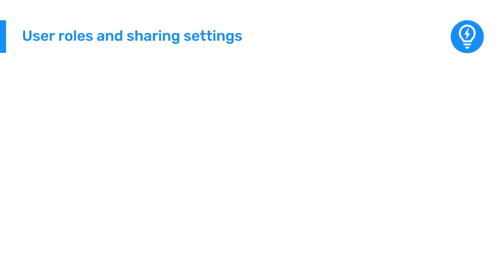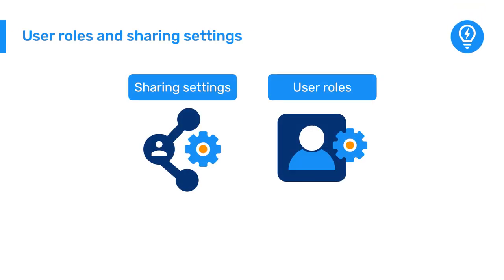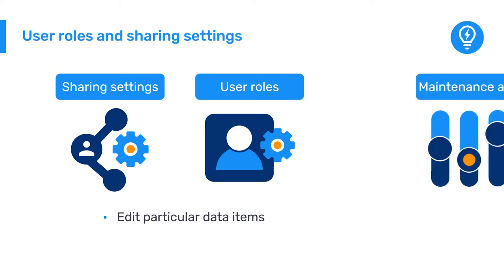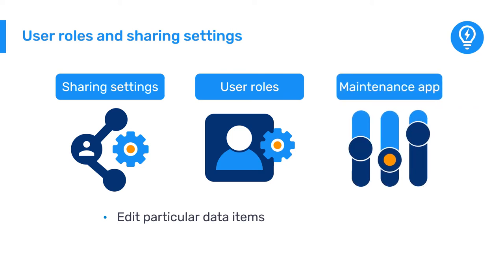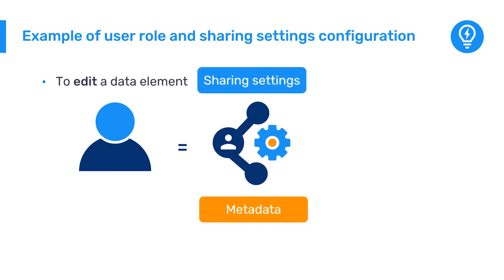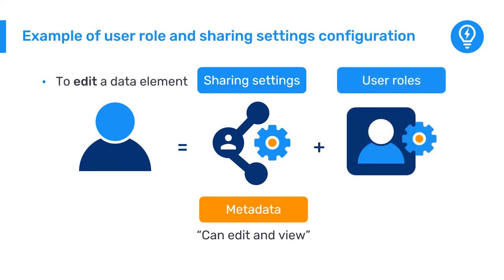User roles and sharing settings are closely linked. If you would like to grant a user the right to edit particular data elements, you need to make sure their user role allows them to access the maintenance app. For example, to edit a data element, a user would need the data elements shared with them using the can edit and view sharing setting, and their user role would have to allow them to access the maintenance app.